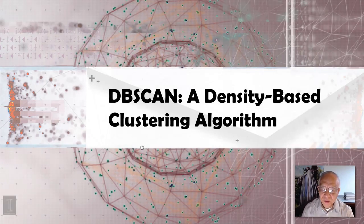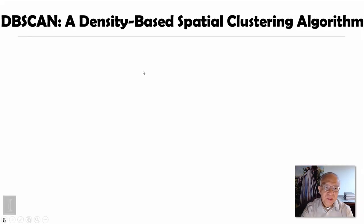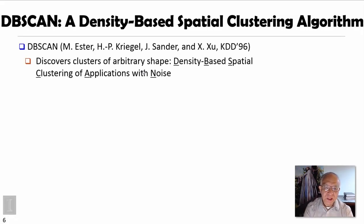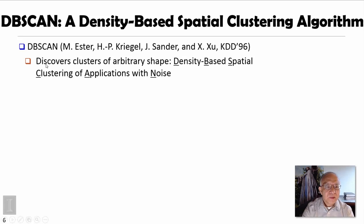In this session, we are going to introduce a density-based clustering algorithm called DBSCAN. DBSCAN is a density-based spatial clustering algorithm introduced by Martin Ester and Hans-Peter Krieger's group in KDD 1996. This paper received the highest impact paper award at KDD 2014 and developed an interesting algorithm that can discover clusters of arbitrary shape. DBSCAN itself is an acronym for Density-Based Spatial Clustering of Applications with Noise.